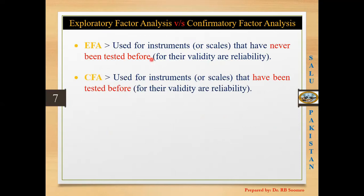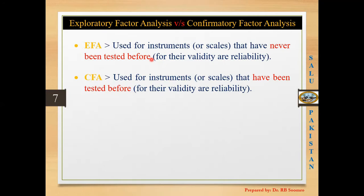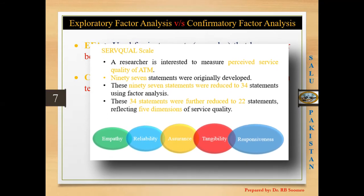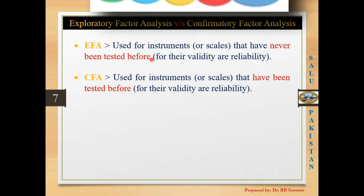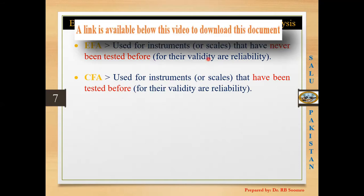EFA is used for instruments or scales that have never been tested before. If you have newly developed an instrument or scale, it is necessary to apply EFA on it. For example, the SERVQUAL model initially had 96 items; after applying EFA they reduced it, eventually reaching 22 items with five dimensions. CFA, on the other hand, is used for instruments that have been tested before. Both EFA and CFA assess validity and reliability.